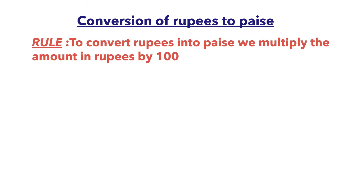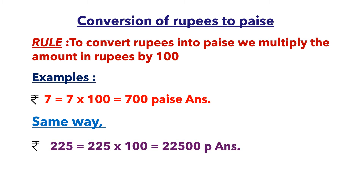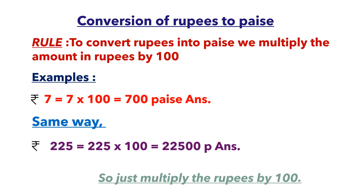The conversion of rupees to paise: the rule is very simple — to convert rupees into paise, we multiply the amount in rupees by hundred. For example, rupees seven multiplied by hundred gives 700 paise. Similarly, rupees 225 multiplied by hundred gives 22500 paise. So just multiply the rupees by hundred.